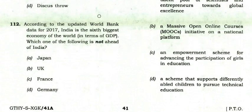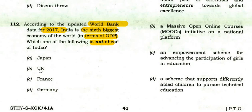According to updated World Bank data for 2017, India is the sixth biggest economy in terms of GDP. Which of the following is not ahead of India? Japan is ahead, the UK is ahead, but France is not ahead of India right now.